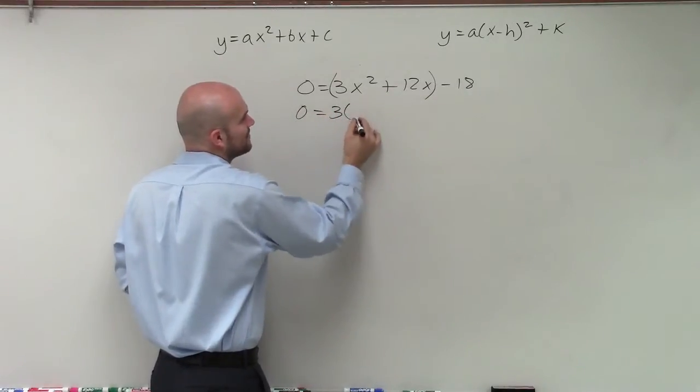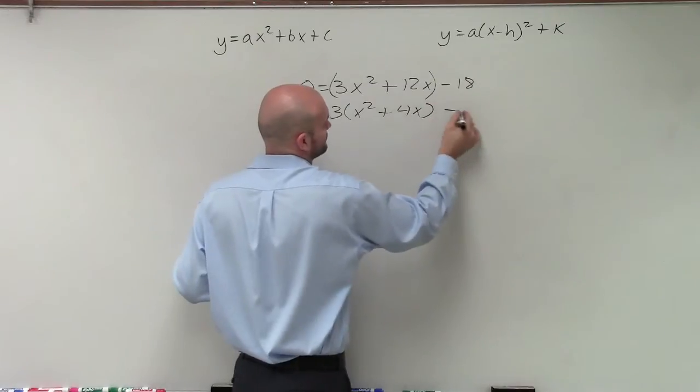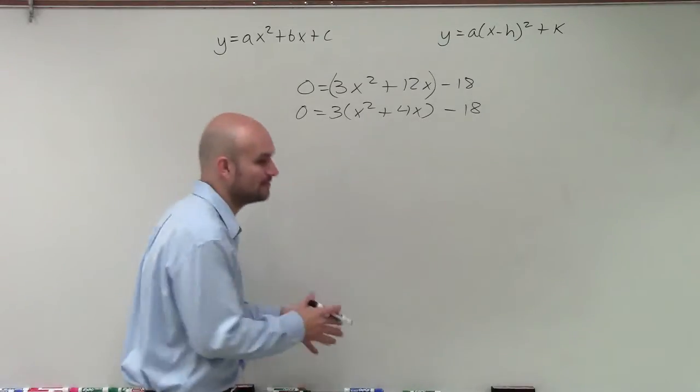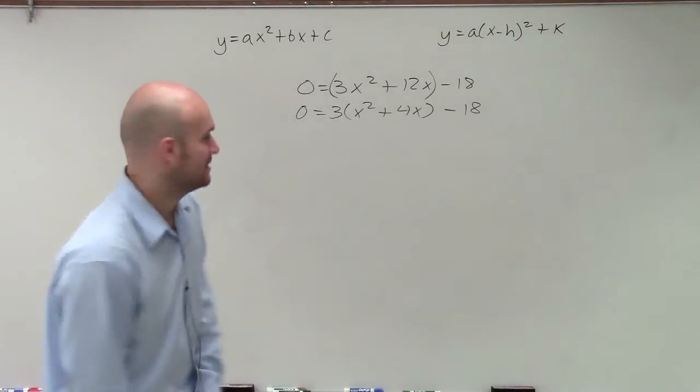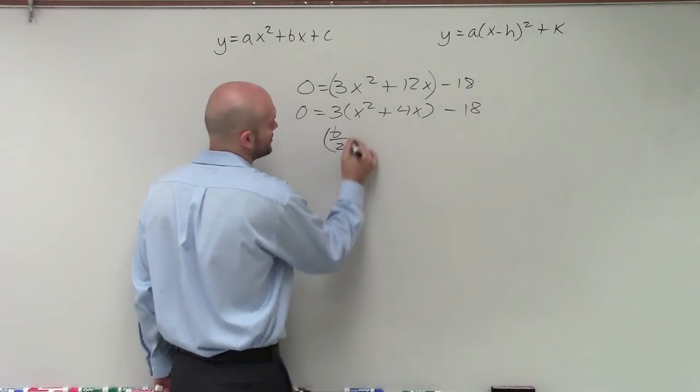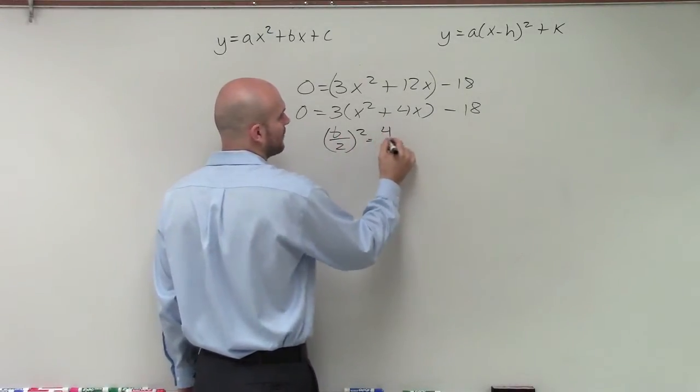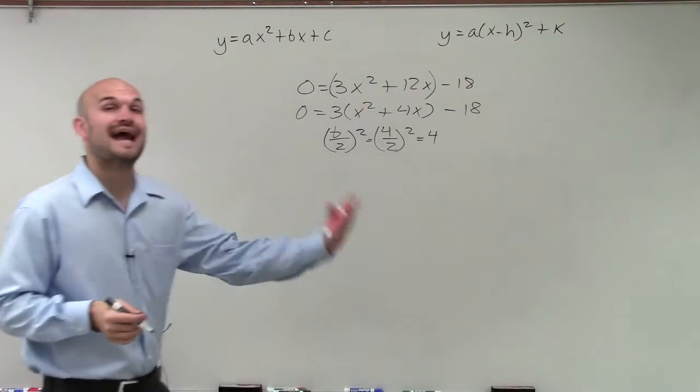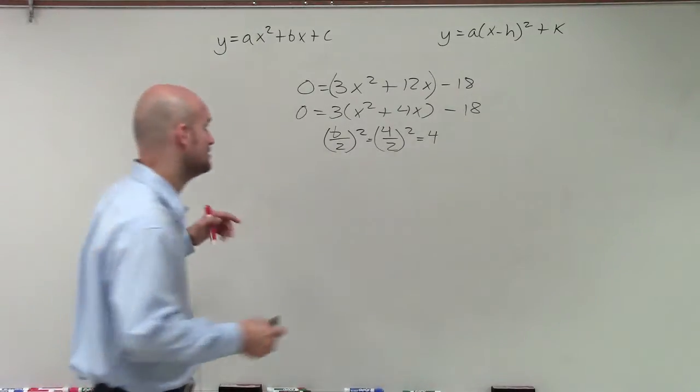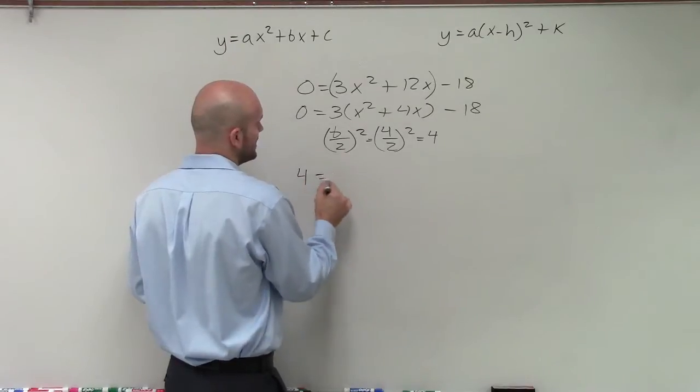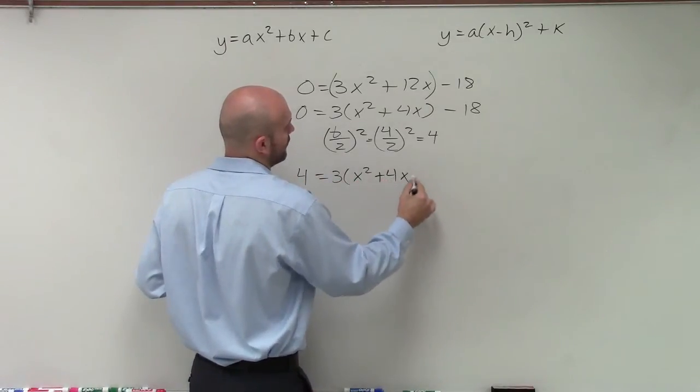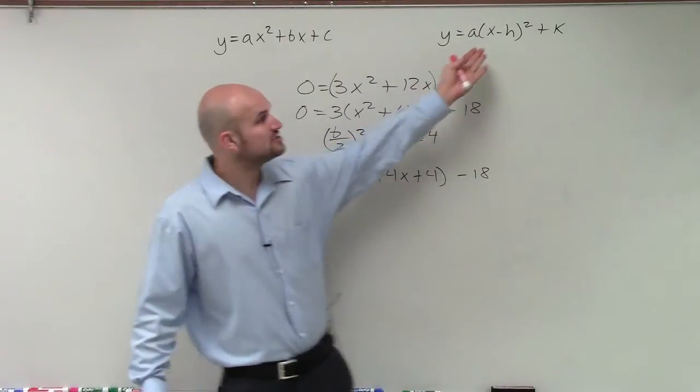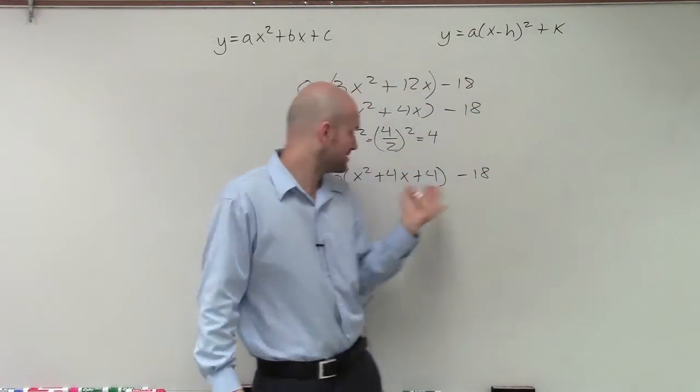So when I factor out a 3, I'm left with an x squared plus 4x minus 18, 4x plus 4 minus 18. You can see now, within this parentheses, I've created a perfect square trinomial, which we can now factor down to a binomial squared, which is x plus 2.